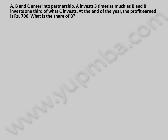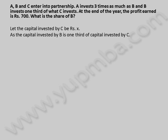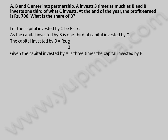A, B, and C enter into partnership. A invests three times as much as B, and B invests one third of what C invests. At the end of the year, the profit earned is 700 rupees. What is the share of B? Let the capital invested by C be X rupees. As the capital invested by B is one third of capital invested by C, the capital invested by B is equal to X by 3 rupees. Given the capital invested by A is three times the capital invested by B, capital invested by A is equal to three into X by 3, which equals X rupees.